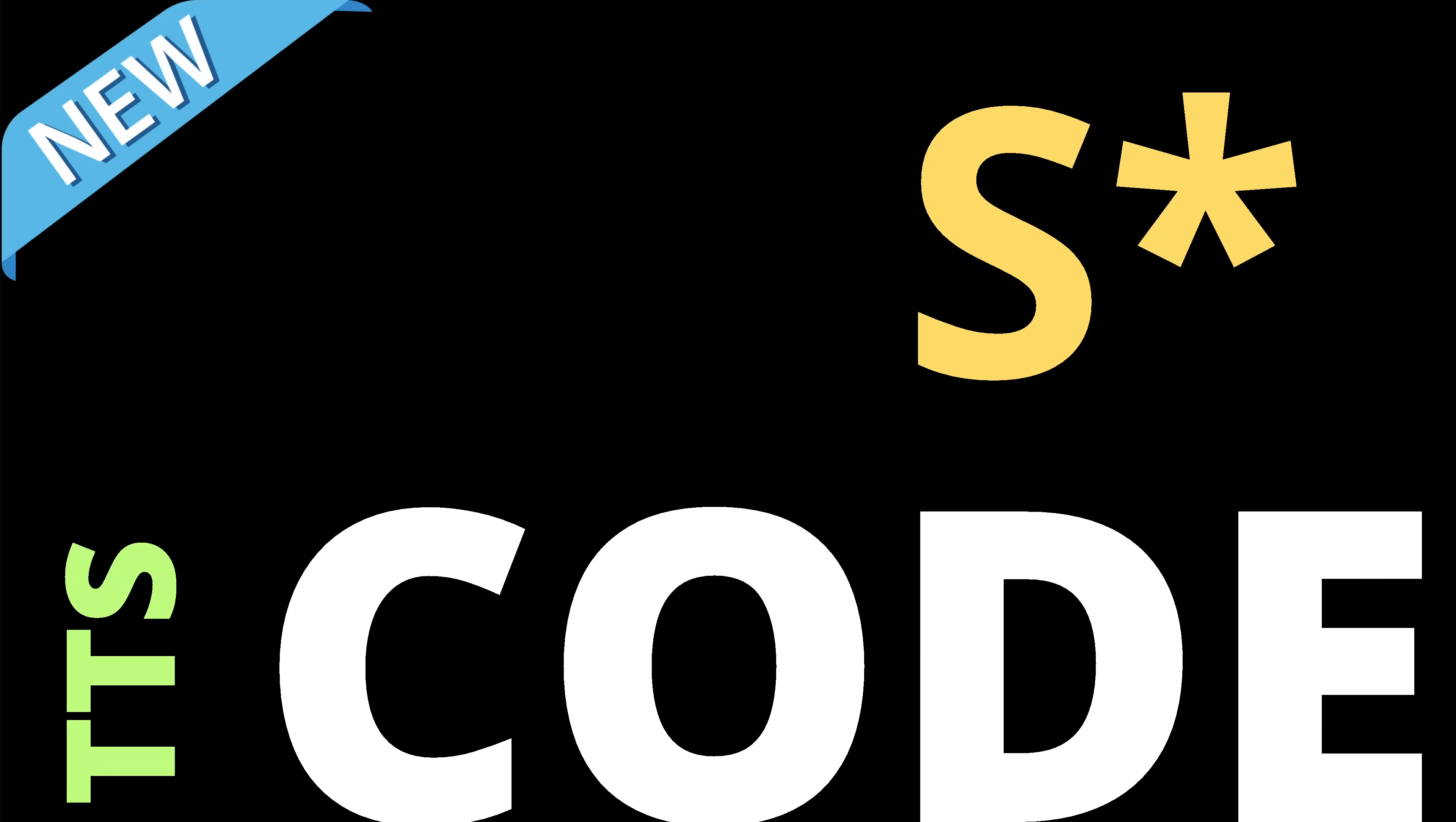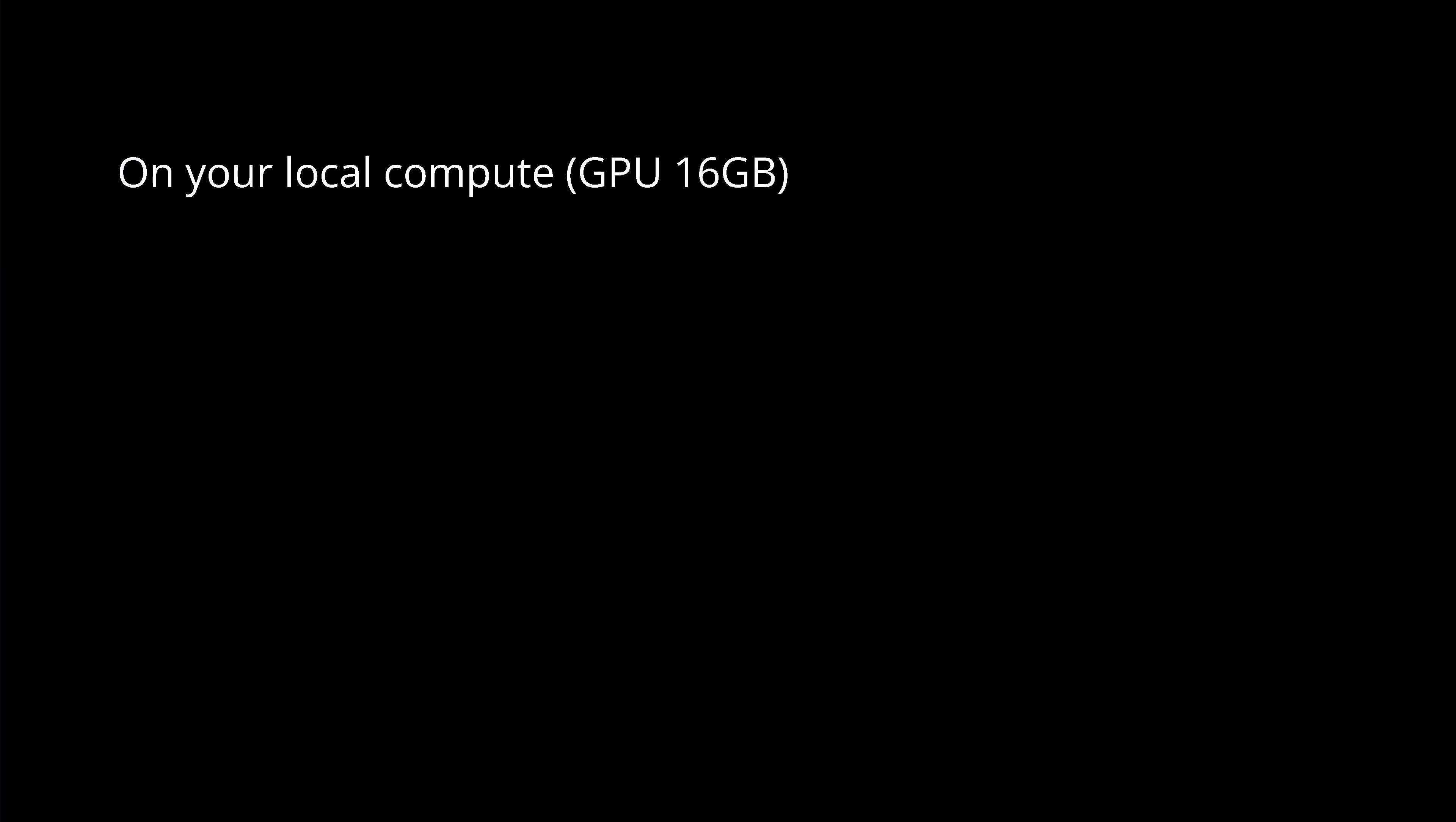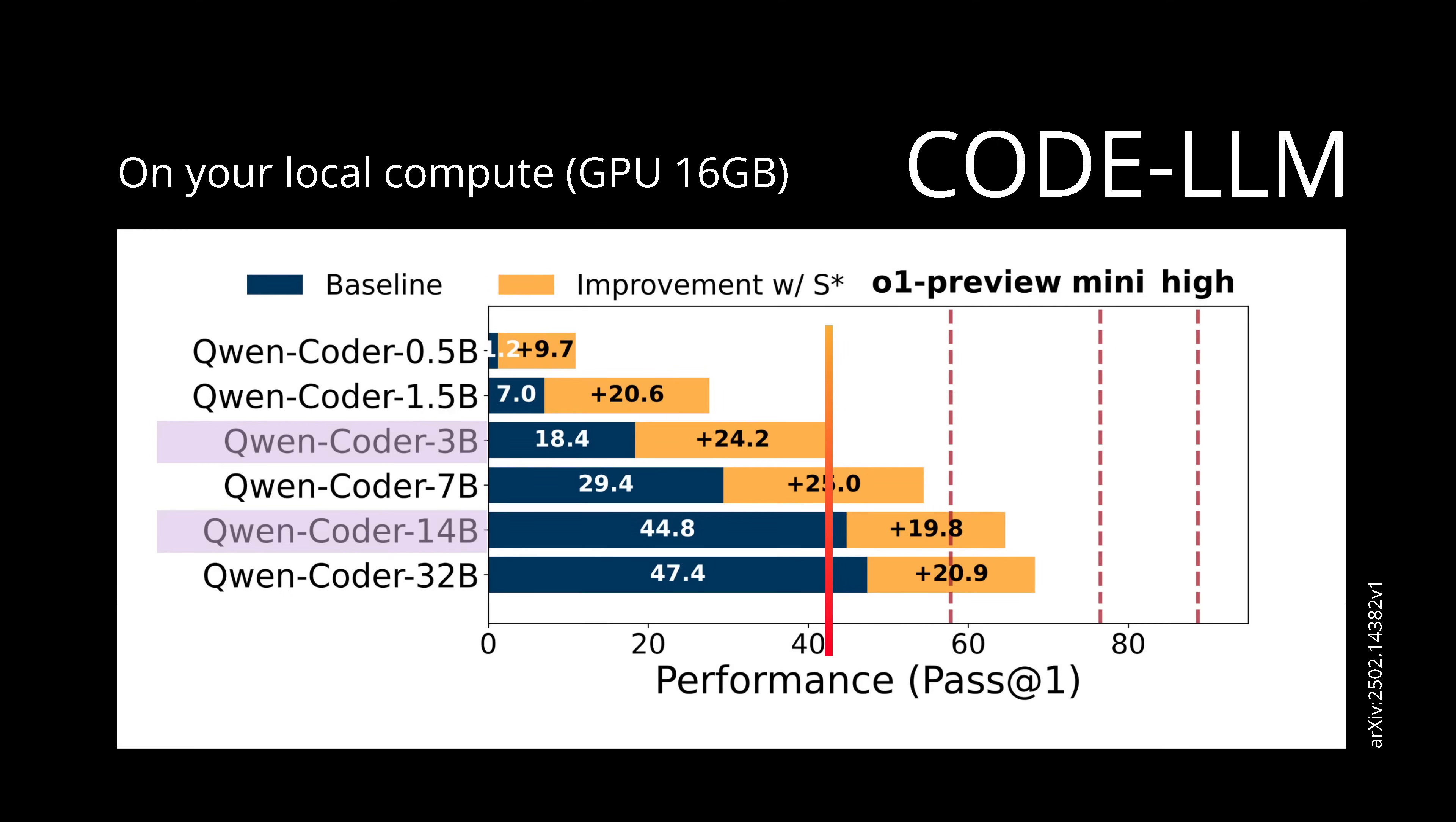Hello community, today we want to increase AI coding performance at least 100 percent. We call it S-Star. Let's have a look. You know you have your local compute, a GPU with let's say 16 gigabyte of VRAM, and you want to use a typical code LLM that helps you to code locally on your machine. Imagine you would have a QwQ coder that has a normal performance of about 20 percent.